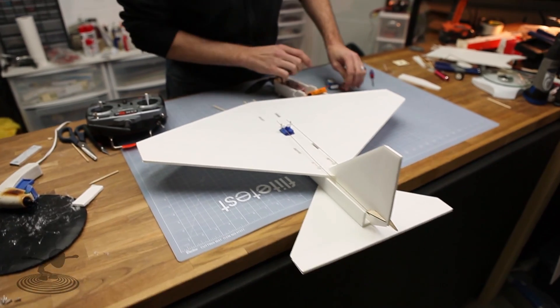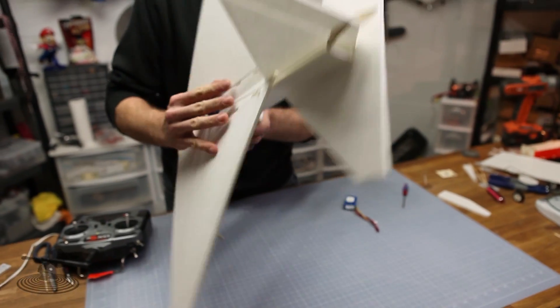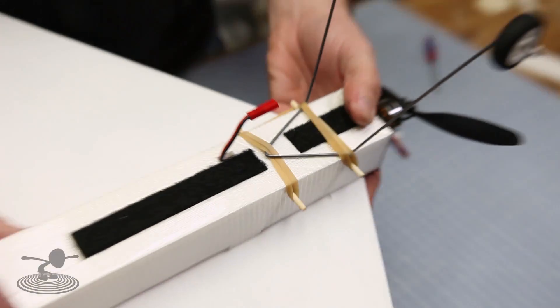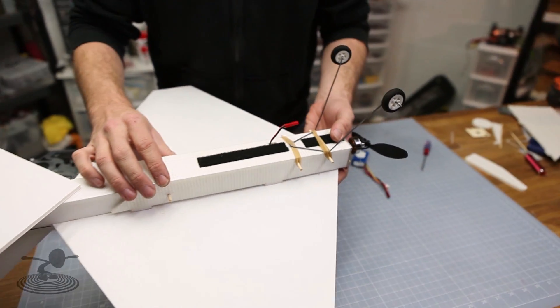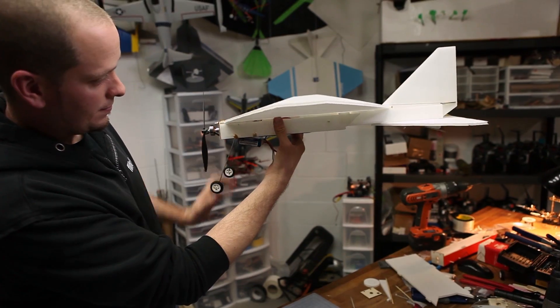Now that we're happy with our control throws and everything is locked down, the next step is to reinstall our power pod. And if you choose, now would be the fine time to reinstall your landing gear. Our last step is to go to the CG markings and place our battery so that the CG marks properly. There we go.